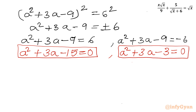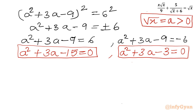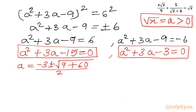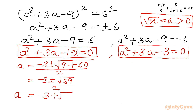Remember our substitution was √x equal to a. This a should always be positive for real solutions, so we will reject where a is negative. Applying the quadratic formula to the first equation: a equals (minus 3 plus or minus √69) over 2.